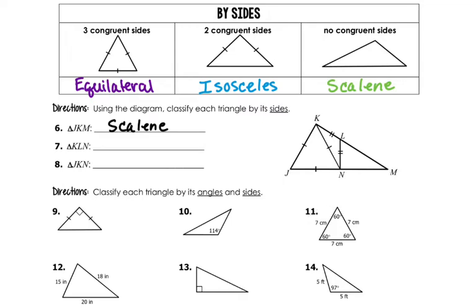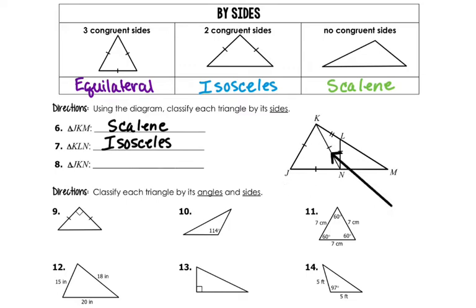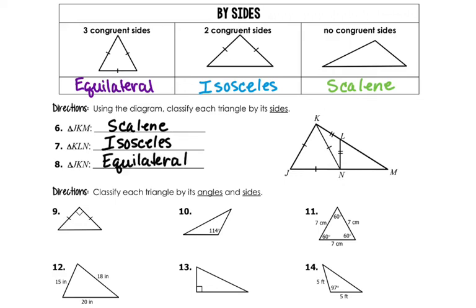Number seven: KLN is the little triangle in the middle. You can see two of the sides are congruent, so that's isosceles. And then JKN is the equilateral triangle with all three sides congruent.